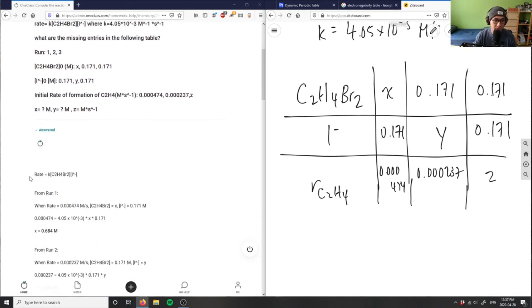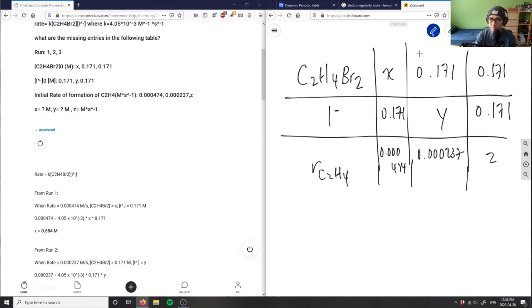Basically all I have to do is rewrite the rate law here. And that's what this student did, right? K equals C2H4Br2 times the concentration of I minus. When the rate is 0.000474, I can simply sub these two values in and calculate the X value here. So let me do a sample one for you.